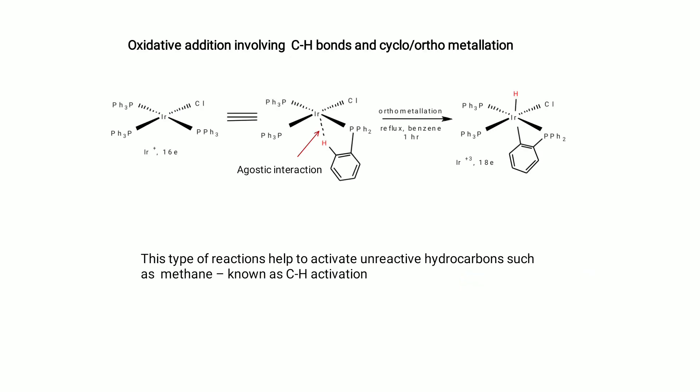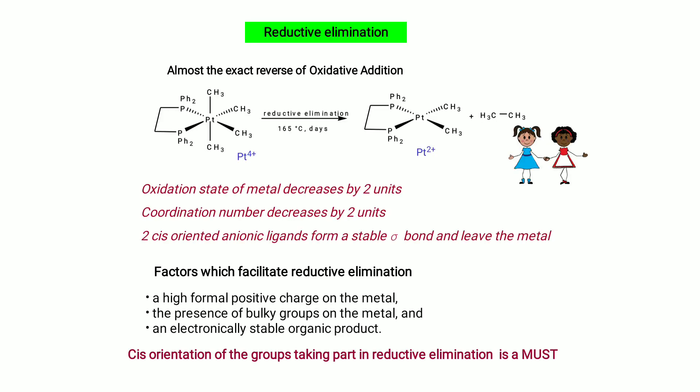Oxidative addition involving C–H bonds — cyclo-orthometallation — helps to activate unreactive hydrocarbons such as methane, known as C–H activation.